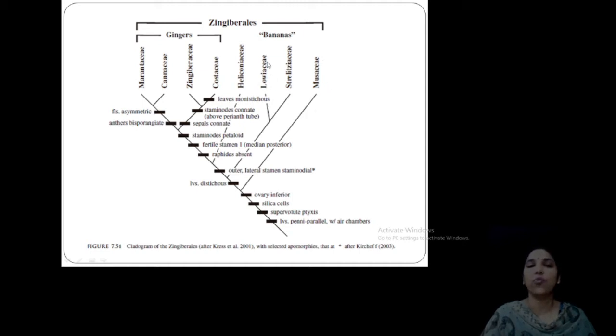Here they are included into two groups: bananas and Zingiberales. The bananas group includes Musaceae, then Strelitziaceae, Lowiaceae, and Heliconiaceae. In the ginger families you can see Costaceae, Zingiberaceae, Cannaceae, and Marantaceae.